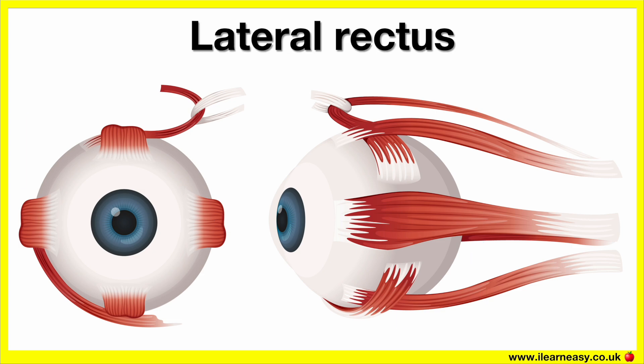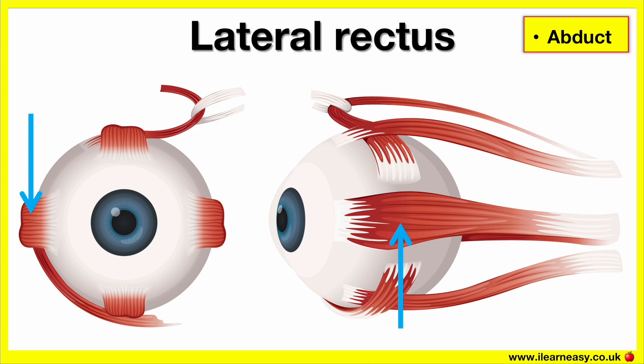Lateral rectus. The origin of the lateral rectus is the common tendinous ring. The insertion of the lateral rectus is the lateral part of the sclera. The actions of the lateral rectus are that it abducts. This means it helps us to look outward.